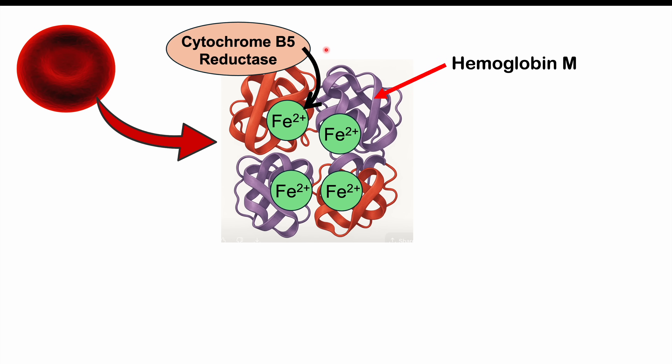The other congenital form is the autosomal dominant form — hemoglobin M disease. If there's an amino acid change in one of the globin chains, this can lead to hemoglobin M, which is more prone to oxidizing the iron atom, converting ferrous ion (Fe2+) into ferric ion (Fe3+).